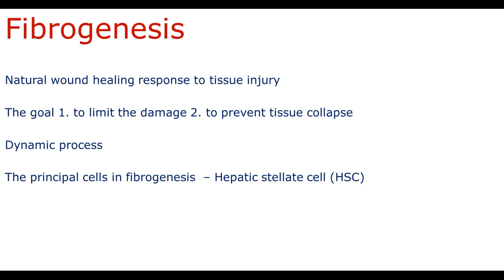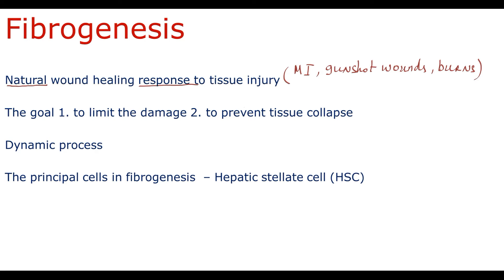What is the function of fibrogenesis in liver disease? First of all, scar formation is a natural wound healing response to tissue injury. It occurs in almost all tissues after exposure to any destructive stimulus that causes a disruption of tissue unity — for example, myocardial infarction, gunshot wounds, burns, and many other conditions. The goal of fibrogenesis in liver disease is to limit the damage by encircling hepatocytes from areas with high inflammation, thereby saving them, and to prevent tissue collapse, because when hepatocytes die something needs to fill up the empty space. Scar tissue works like biological glue to keep tissue unity.